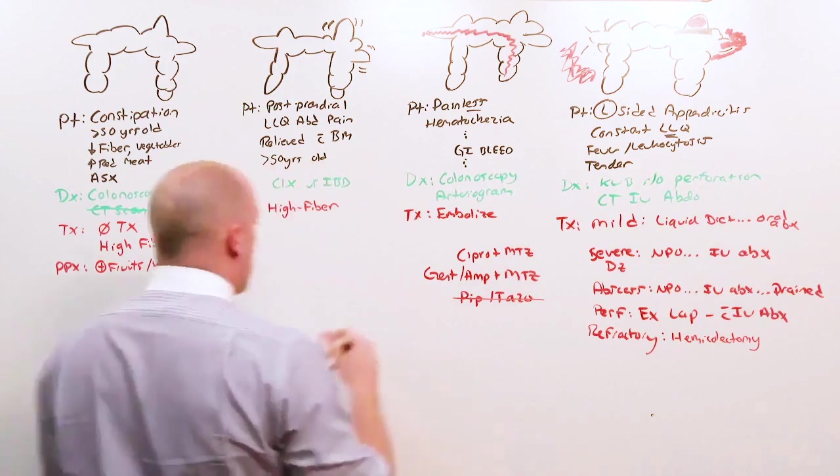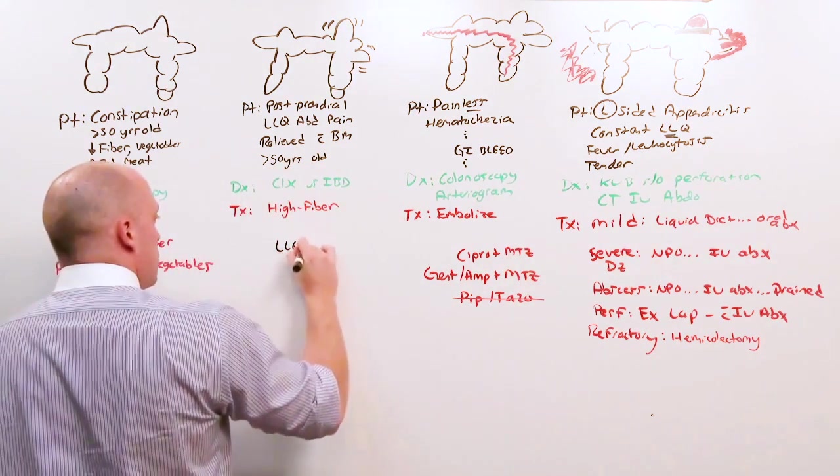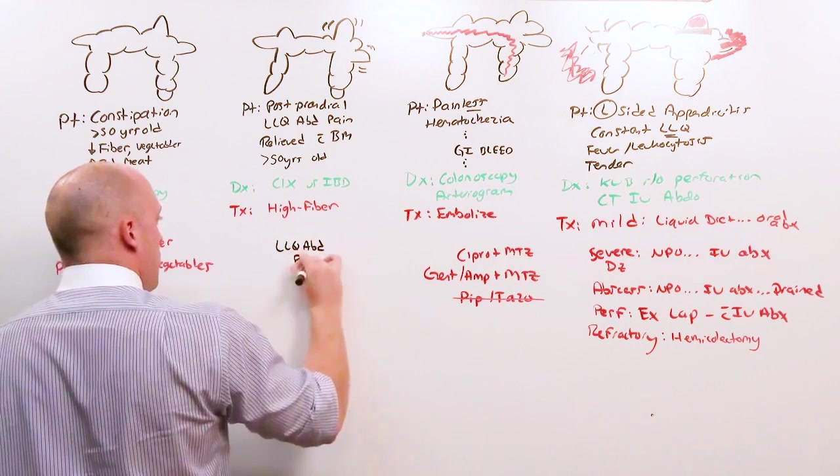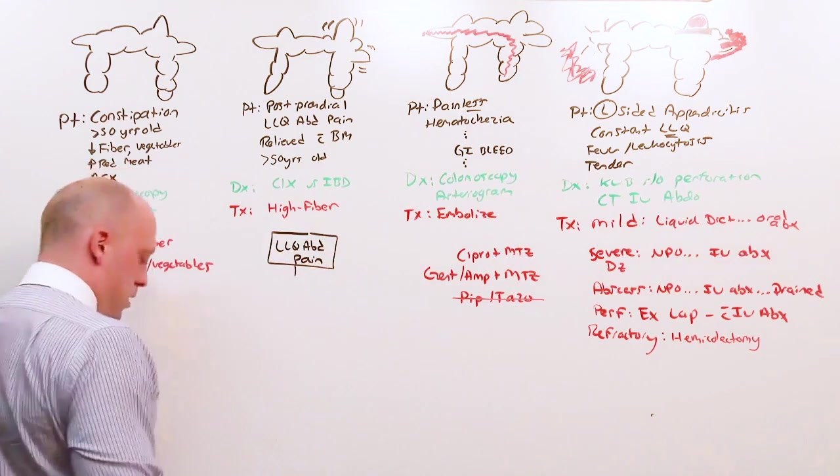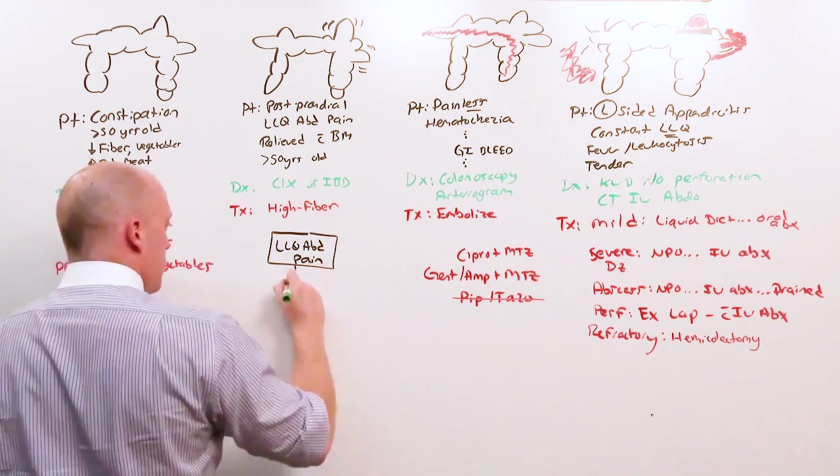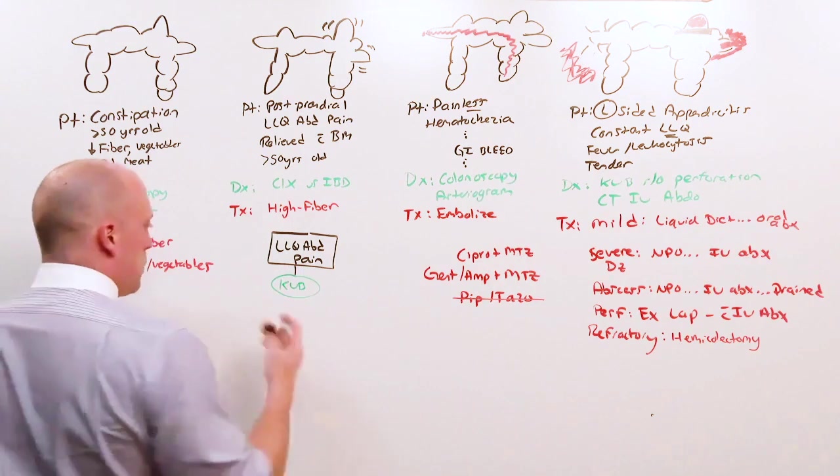Because diverticulitis is such a big deal, I want to close by doing it again. If someone comes in with left lower quadrant abdominal pain, you can probably skip the KUB because the CT scan is going to be enough. But if you just do the KUB, you'll see one of three things.